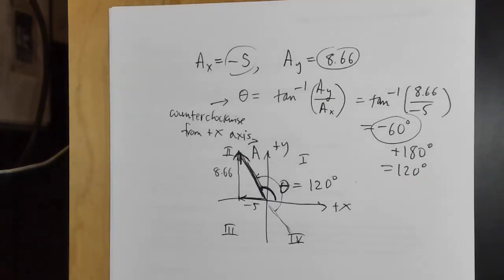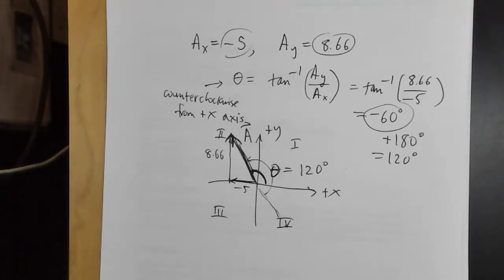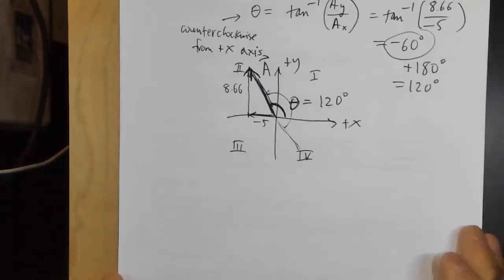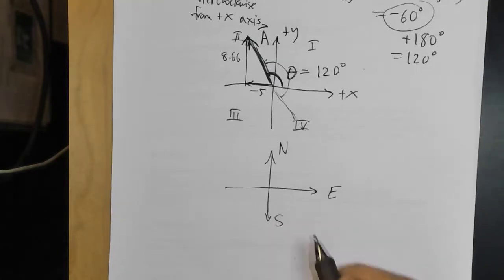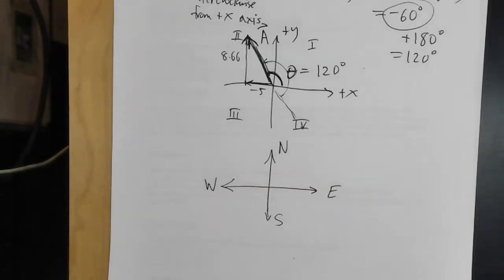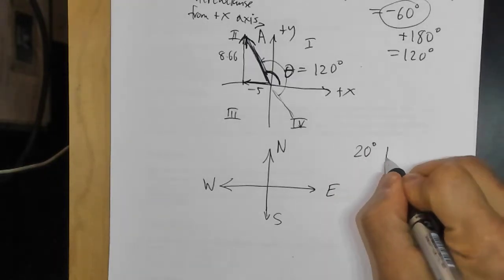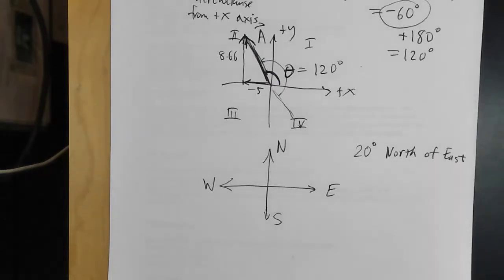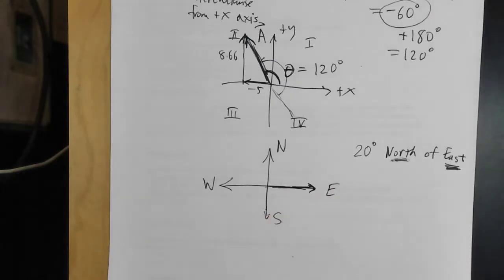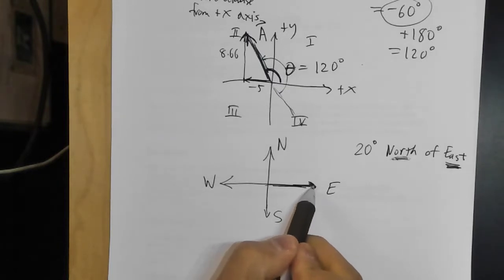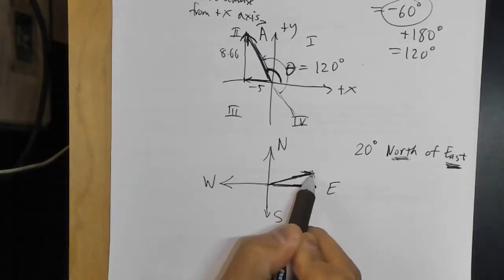Now about compass direction language, especially for non-native English speakers: if north is up on a map, then east is the positive x-direction. When they say '20 degrees north of east,' the key is that the last word is the starting point. So you start from east and tilt toward north — that angle is 20 degrees north of east.